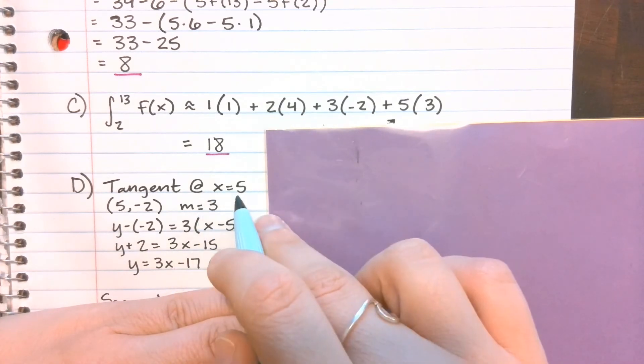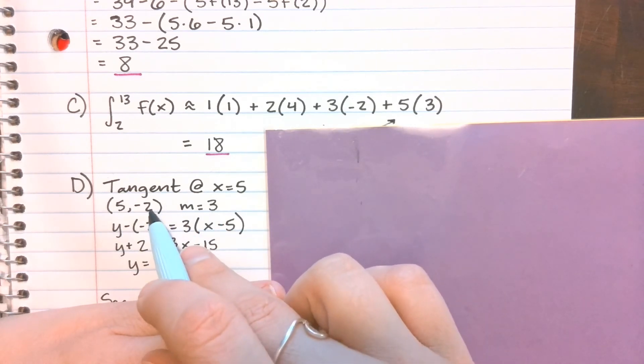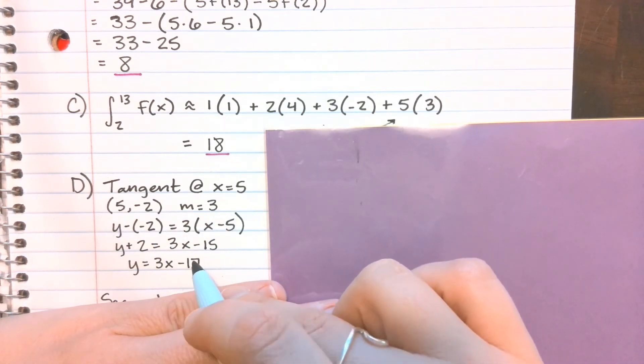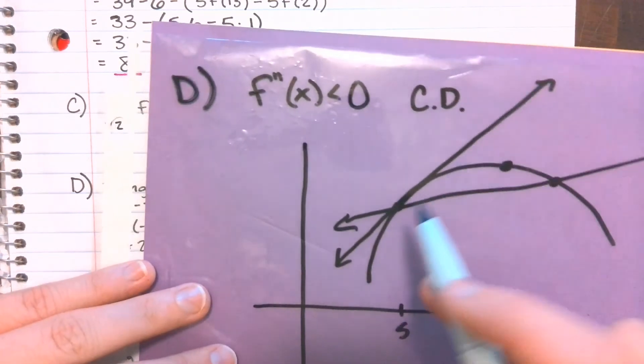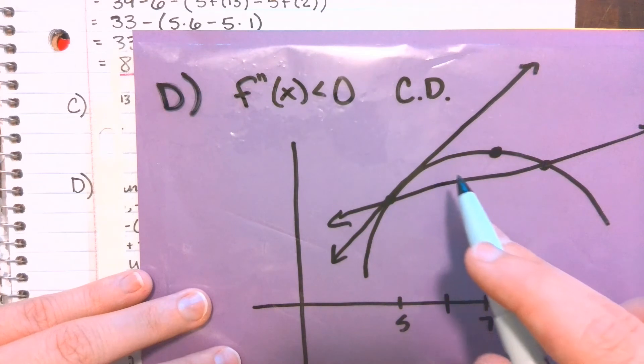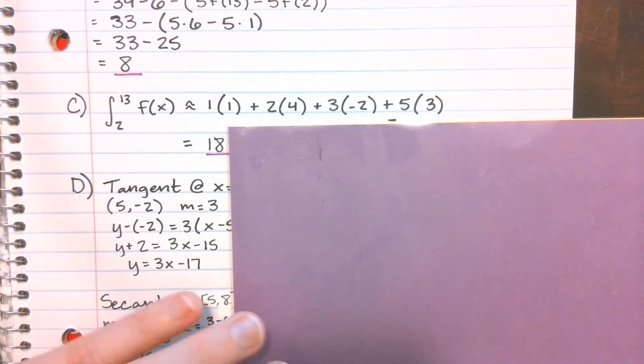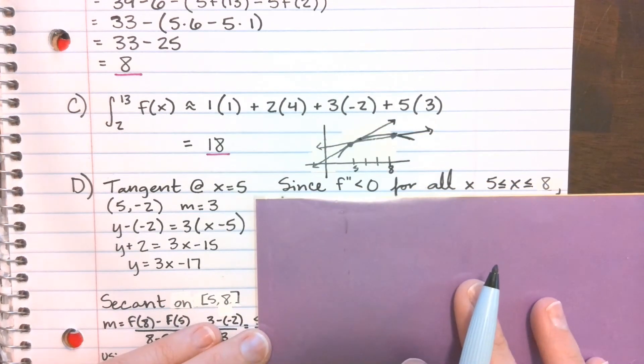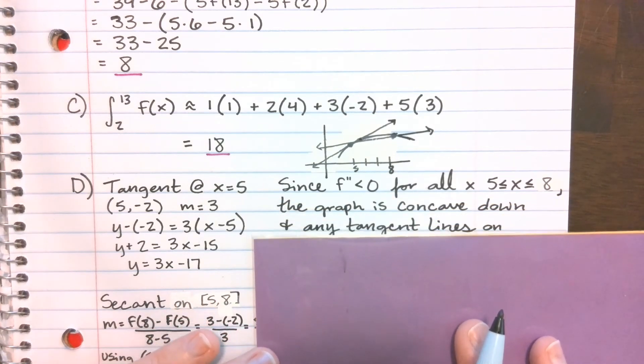So first that tangent at x equals 5, using the fact that they told us f prime of 5 is 3, so that tells us the slope is 3, and then using our table, we know that f of 5 is negative 2. So just using that, we can write an equation for that line. Okay, so remember we're talking about this tangent line here that is an over-approximation for anything in this range, 5 to 8. So if I'm plugging in 6 into this line, it's going to be above the actual f of 6. Okay, so our explanation, we're going to say, first of all, that since that f double prime is less than 0, we know that it's concave down, and any tangent line is going to have to be above f of x for that 5 to 8.